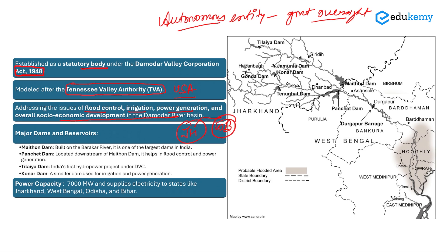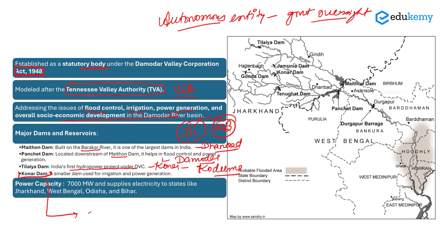Let us see some of the major dams and reservoirs located under this project. First is Meithon Dam, built on the river Barakar in Dhanbad district. Next is Panchet Dam, located downstream of Meithon Dam on the river Damodar. Then there is Tilaya Dam, which was the first hydropower project under DVC, located on the river Konar in Koderma district of Jharkhand. The last one is Konar Dam, located on the Konar River in Hazaribagh district.